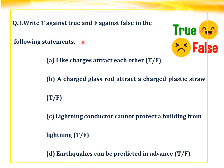Question number three: write true or false for the following statements. a) Like charges attract each other — this is false, because like charges repel each other. b) A charged glass rod attracts a charged plastic straw — the charged rod will have a positive charge and the plastic straw will have a negative charge. As opposite charges attract each other, the glass rod will attract the charged plastic straw. Hence the answer is true.